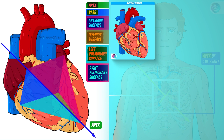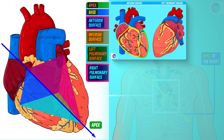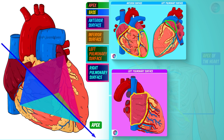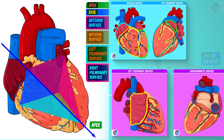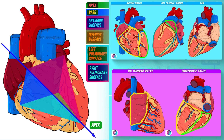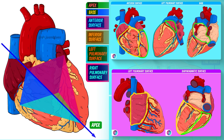The anterior surface is mainly represented by the right ventricle, with a contribution from the right atrium and the left ventricle. The left pulmonary surface is mainly represented by the left ventricle, with a contribution from the left atrium. The right pulmonary surface is mainly represented by the right atrium. The inferior surface is represented mainly by the left ventricle and the right ventricle. The base is represented mainly by the left atrium and part of the right atrium. And the apex is represented by the tip of the left ventricle, which in normal conditions points downwards and to the left.